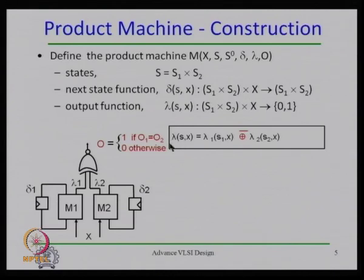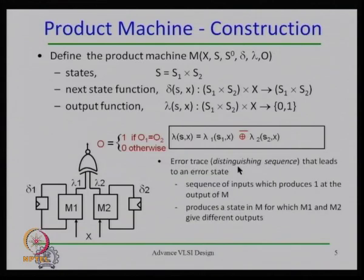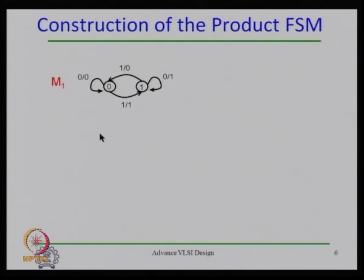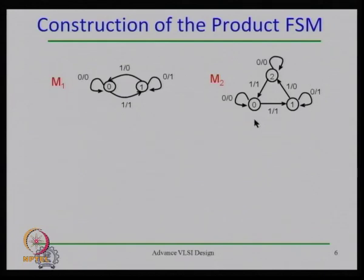The lambda function is the output function of machine M1 XNORed with the output function of machine M2. If the output is 0, that error trace is the distinguishing sequence — a sequence of inputs that can produce two different outputs from the two machines. Let us look at how we can distinguish two machines: machine M1 has two states 0 and 1, and machine M2 has three states 0, 1, and 2, with their respective state transitions.